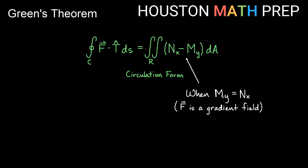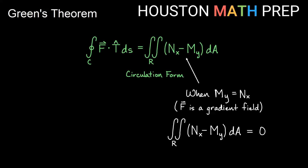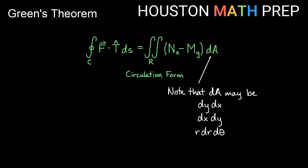When partial M_y and partial N_x are the same, remember that is a gradient field — a conservative field. So if partial N_x and partial M_y are the same, the function inside the double integral is going to be zero, and we would get circulation being zero. Finally, the dA on the end of our double integral may be calculated many different ways depending on the shape of the region: dy dx, dx dy, or in polar r dr dθ for a round region.